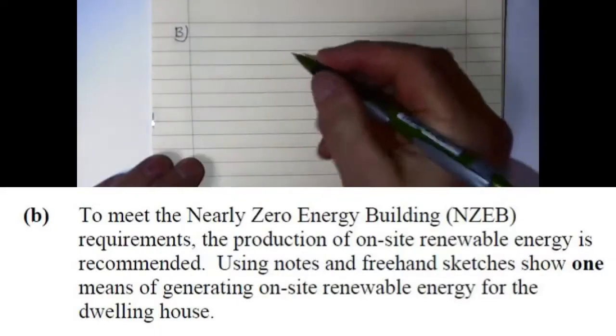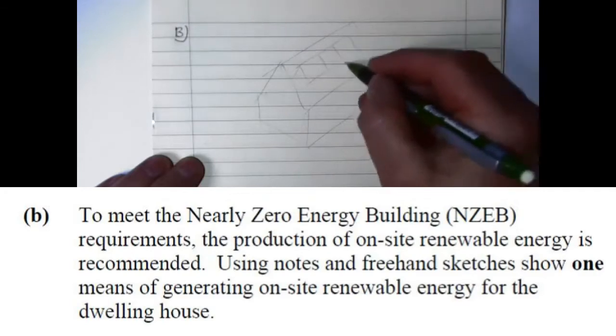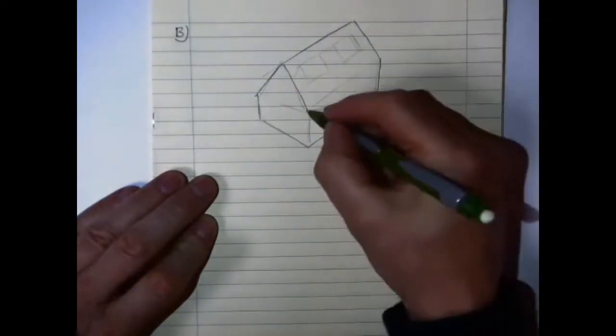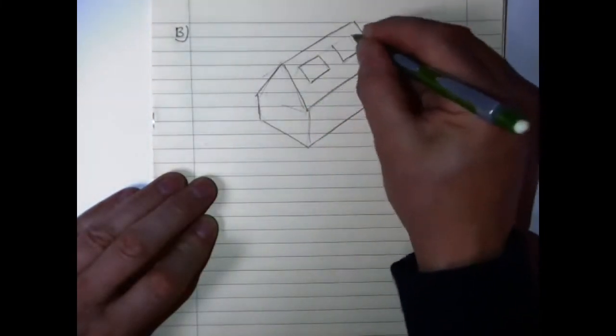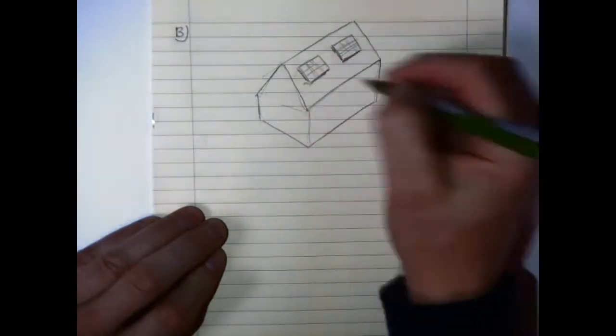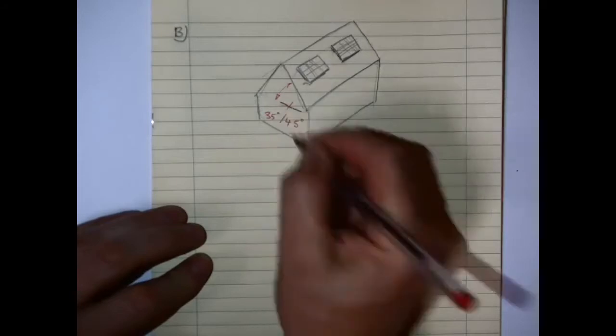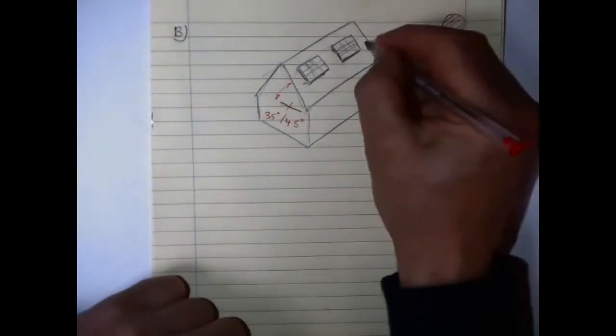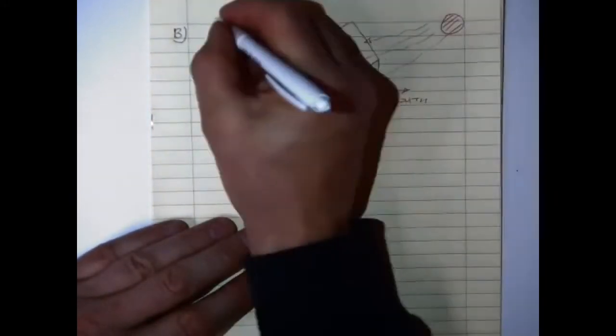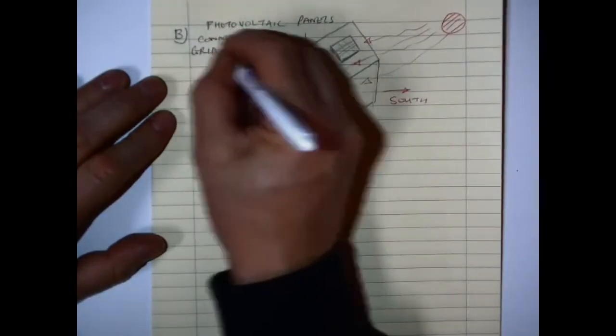On to part B of the question, you're asked to meet the near zero energy requirements. You want to show how you might generate renewable energy on site, one method. The method I'm going to pick here is solar panels. You can see the sketch - it doesn't actually directly relate to the sketch that we're showing in the question in this instance. It's not absolutely necessary, but if you can draw on it, good and well. A simple sketch with a few details noted in. Make sure that you show where the south side is when it comes to the sun because the orientation is very, very important.